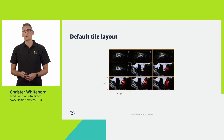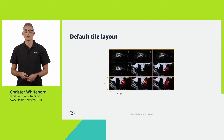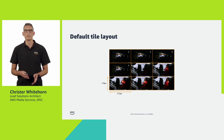Roku have also put some constraints on how the tiles should be laid out. Each image should be 312 pixels by 176 pixels and arranged 3 wide by 3 high.